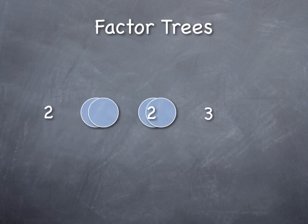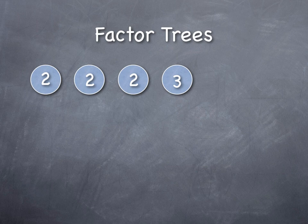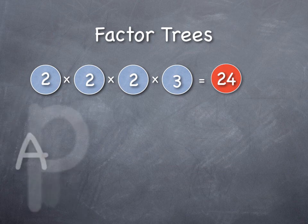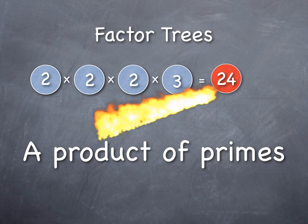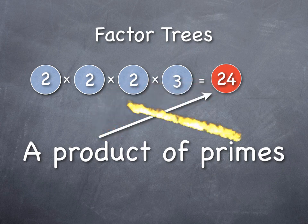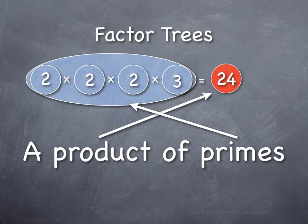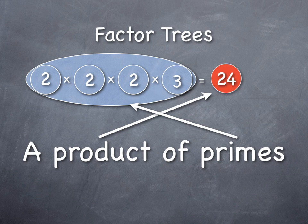When I rearrange them, smallest to largest, again, I end up with the exact same pattern, that 24, no matter how I break it down, is always 3 2s and 1 3, when I multiply to get my product of primes. In our next video, we'll see some more examples of how you can do that with a few different numbers, as well as a shortcut.